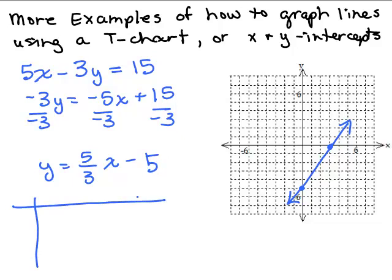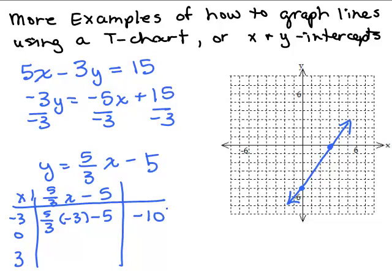And now we would plug in some numbers for X and then compute 5 thirds X minus 5 to get a value of Y. Now since we're doing 5 thirds X, let's pick values of X that are multiples of 3. So negative 3, 0, and 3 might be a good choice. So I have 5 thirds times negative 3 minus 5. The 3's cancel. I have 5 times negative 1, so negative 5 minus 5 is negative 10. And then we're going to plug in 0. If you put in 0 up here in the equation, you're going to get Y equals negative 5. And then 5 thirds times 3 minus 5, the 3's will cancel and 5 minus 5 is 0.